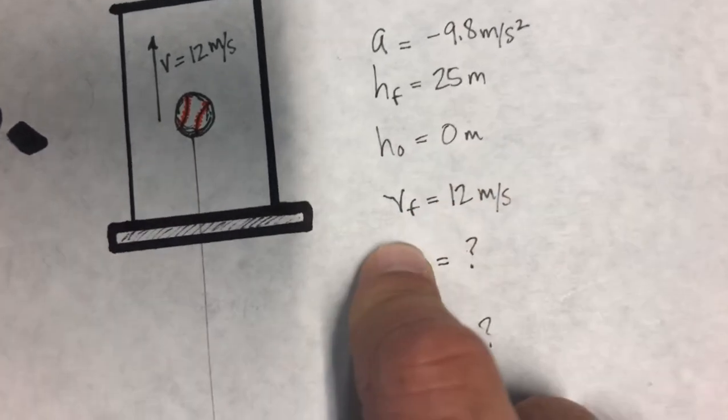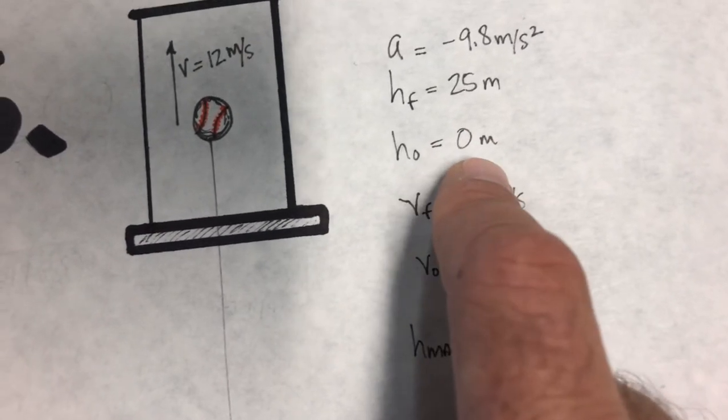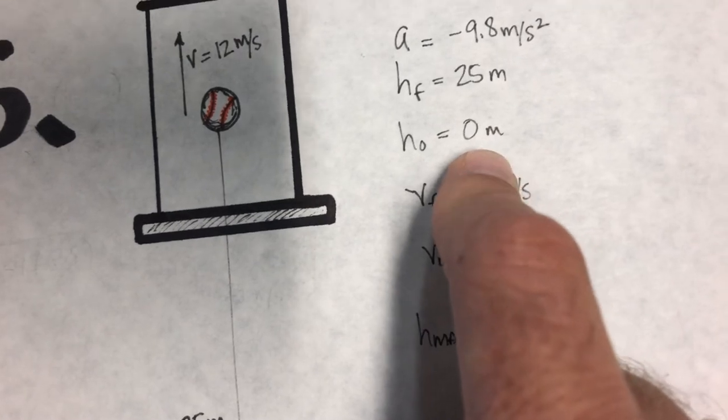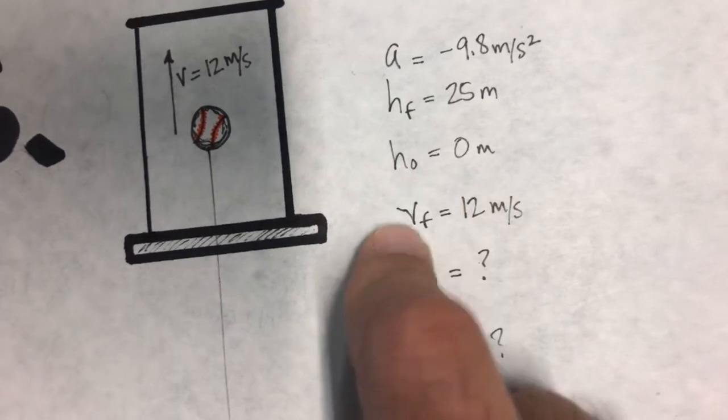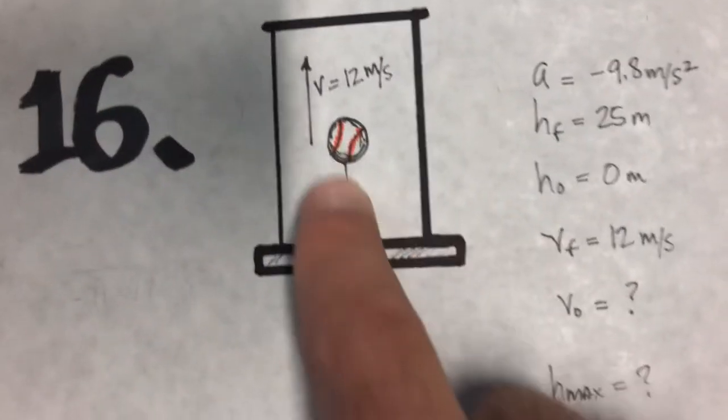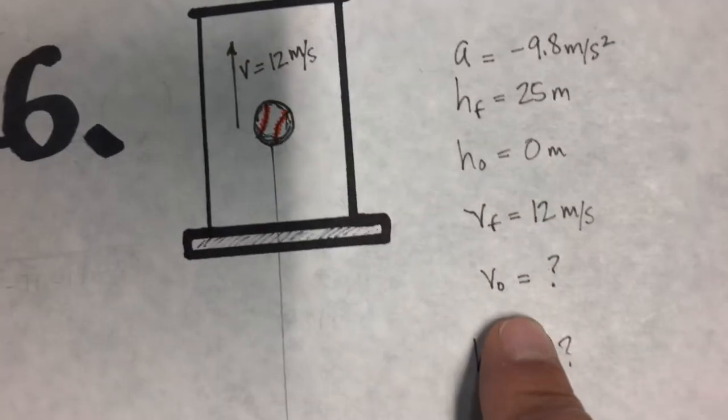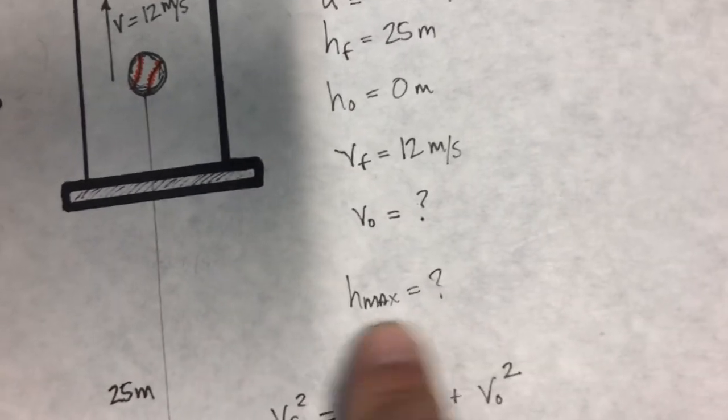...initial seems to be zero. I know some of you would argue well wait, you can't throw it from the ground, but let's just let that be 25 meters above the person who throws it. So height initial is zero. v final here at this point is 12 meters per second, v initial is question mark, and height max is question mark.